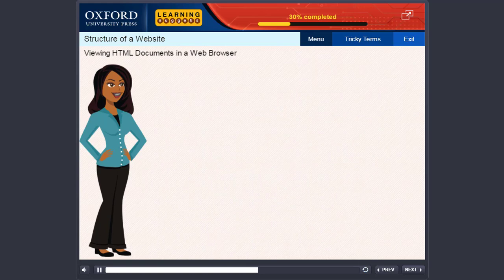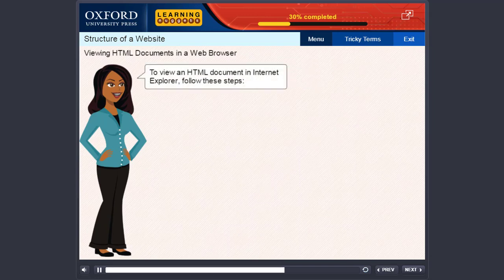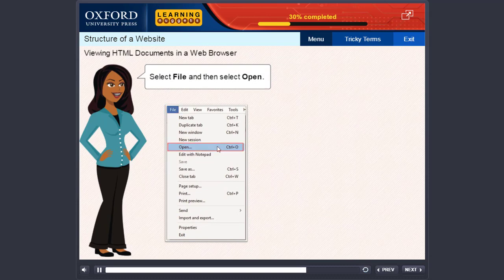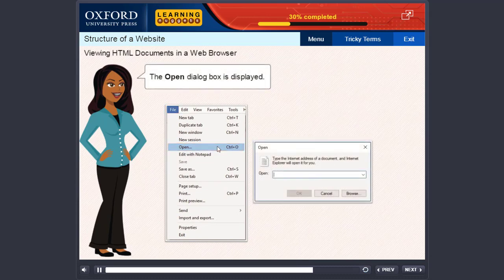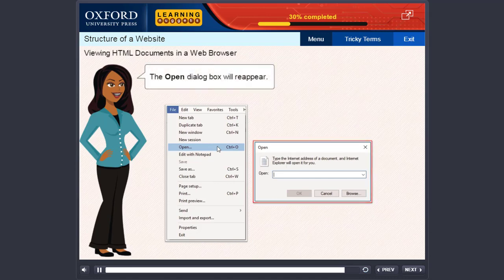Viewing HTML documents in a web browser. You can use any web browser, say Internet Explorer or Firefox, to view an HTML document. To view an HTML document in Internet Explorer, follow these steps: Open Internet Explorer. Select File and then select Open. The Open dialog box is displayed. Click Browse. A file selection dialog box will appear. Select the HTML file you just created. Click Open. The Open dialog box will reappear. Click OK and you will see the file in Internet Explorer.